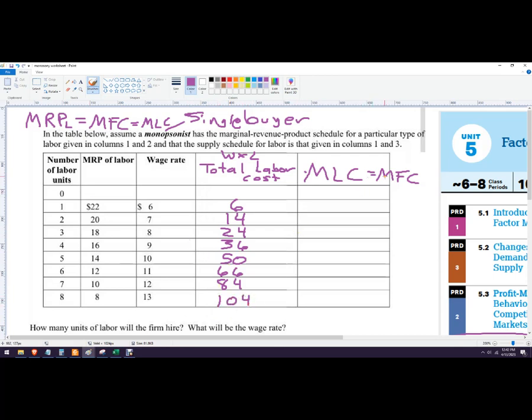Okay. Now, the marginal labor cost, the marginal factor cost, is the change in the total labor cost. Is that kind of weird? Divided by the change in quantity of labor. Now, each quantity unit here is 1. That's how they're going to use that on the AP exam, too. So it's really just dividing by 1. So it's the change from here to here.